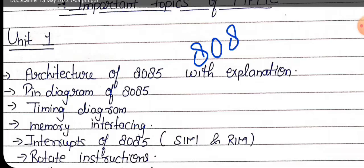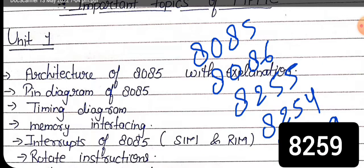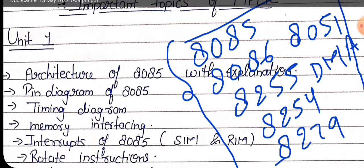That means 8085, 8086, 8255, 8254, 8279 and 8051 and one more, that is DMA 8237. The block diagrams of all these, you should definitely prepare them.